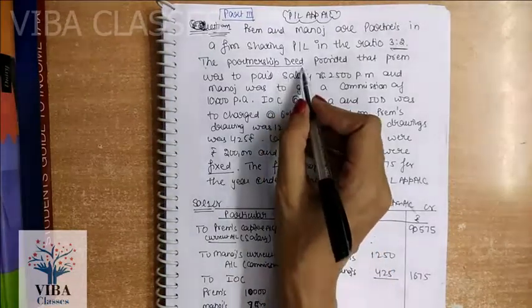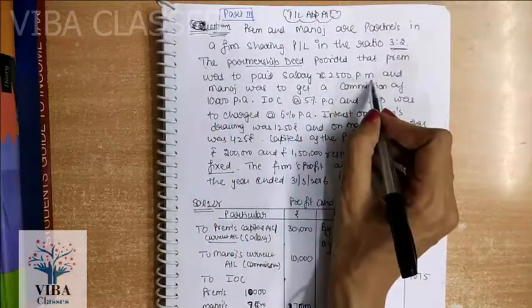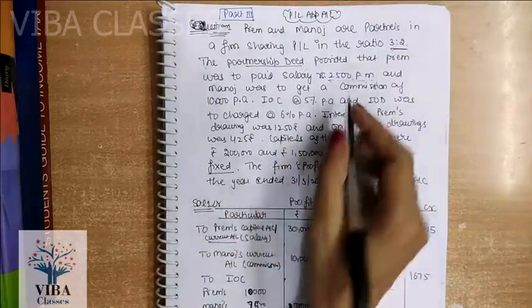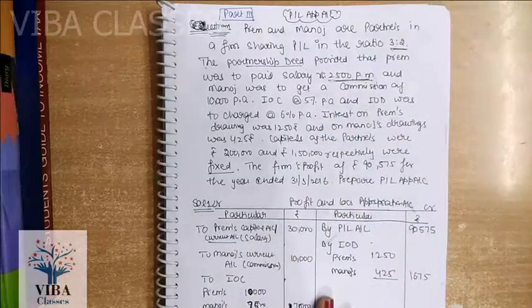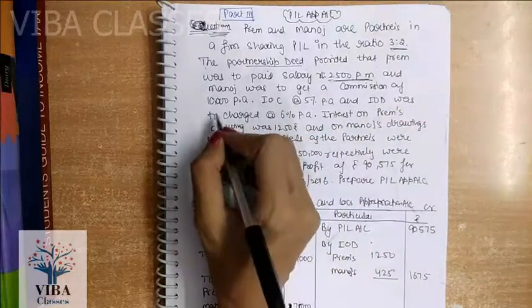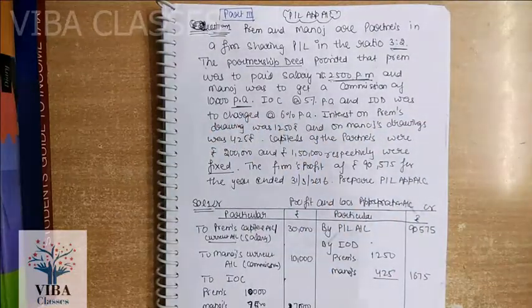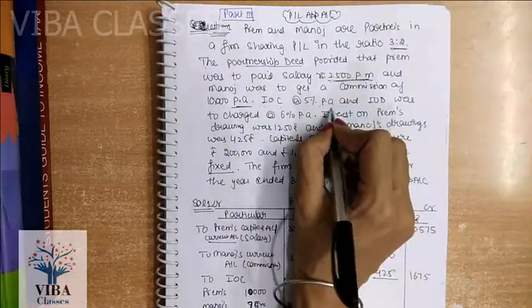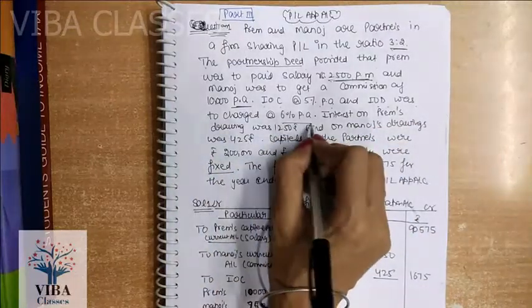This partnership deed provides that Prem is to be paid a salary of Rs. 2,500 per month. We will multiply it by 12 to get the annual salary. And Manoj was to get a commission of Rs. 10,000 per annum. IOC, that means interest on capital, at the rate of 5% per annum. And IOD, that is interest on drawing, was to be charged at 6% per annum.